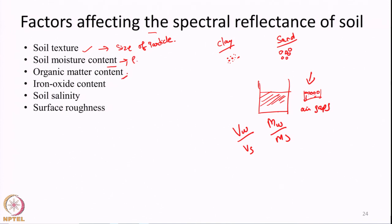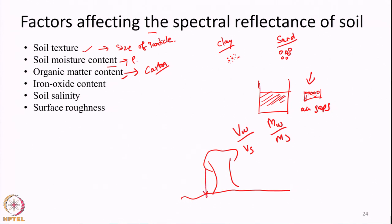That amount of moisture content will normally decrease the reflectance. Then there is organic matter content. Organic matter content refers to substances that are rich in carbon. For example, leaves from a tree may fall, decay, decompose and mix with the soil. There may also be tiny organisms in the soil that die and decompose. All these organic substances may finally mix with the soil or decompose, and the amount of organic content present within soil is going to affect its reflectance.